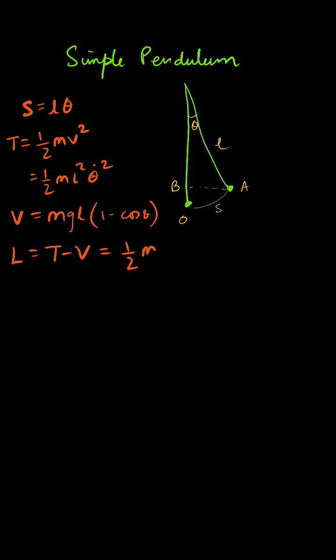Which is equal to half m L squared theta dot squared minus m g L times one minus cos theta. Now calculate dL by d theta and dL by d theta dot and use the Lagrangian equation.